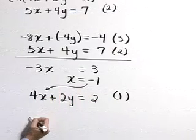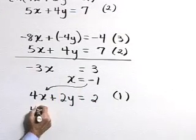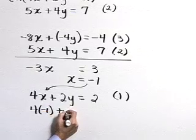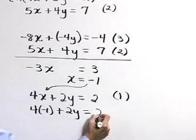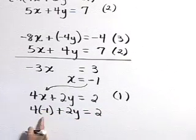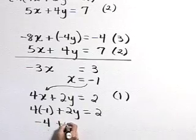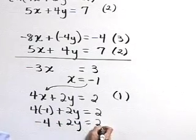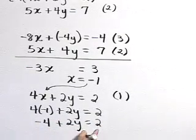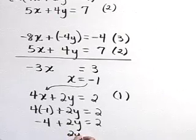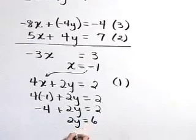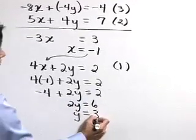And substituting x equal negative 1, we have 4 times negative 1 plus 2y is equal to 2. That's a negative 4 plus 2y is equal to 2. Adding 4 to both sides gives 2y is equal to 6, or y is equal to 3.